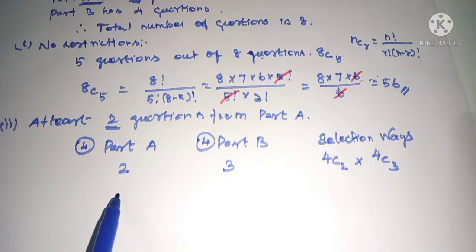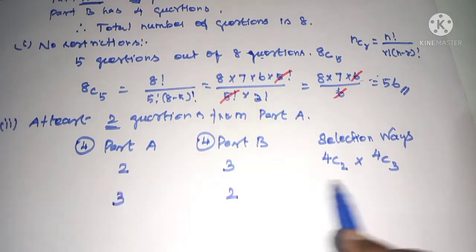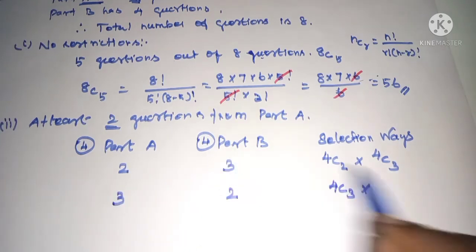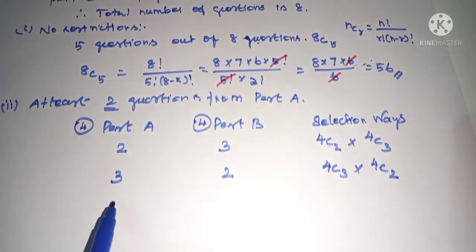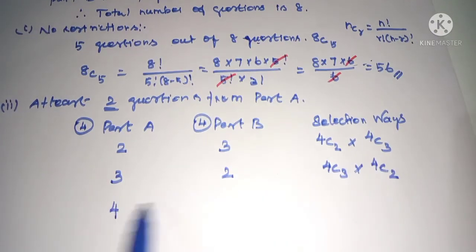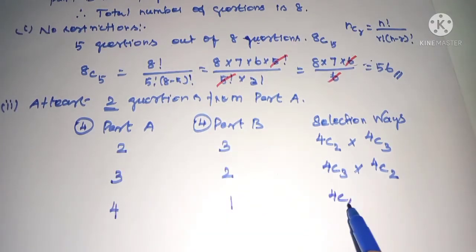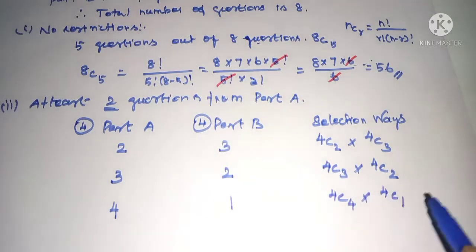At least 2 questions — so the cases are: 2 from Part A and 3 from Part B; then 3 from Part A and 2 from Part B; then 4 from Part A and 1 from Part B. So total is 4C4 into 4C1 for the last case.